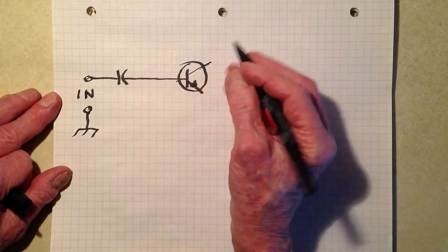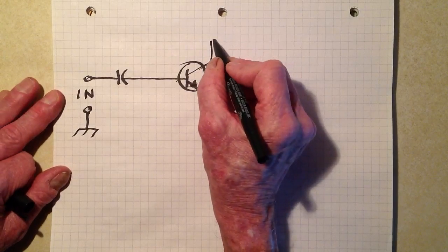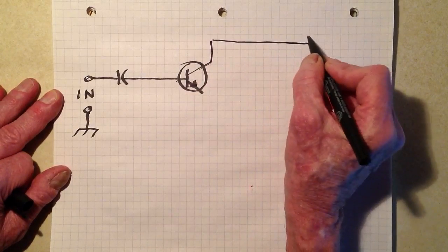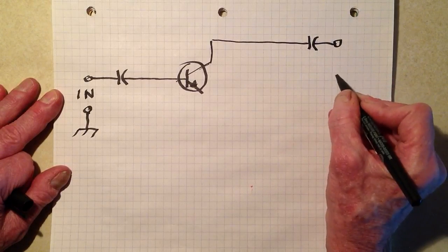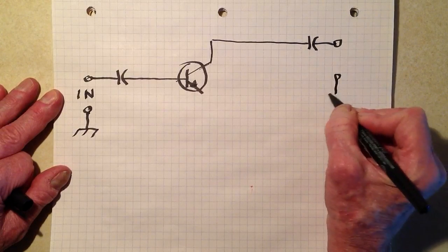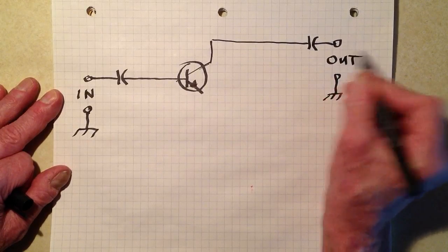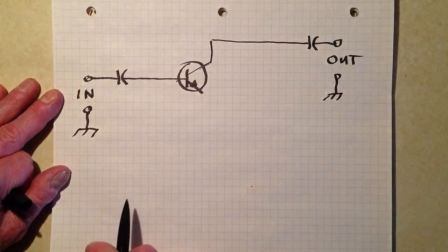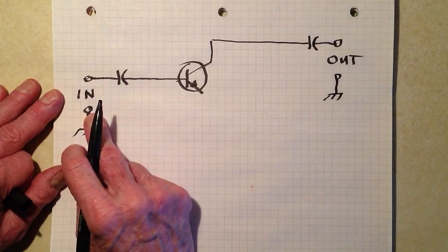So the collector here goes along through a capacitor to the output. Notice I've included a grounded terminal at the input and a grounded terminal at the output indicating an unbalanced load and an unbalanced input.